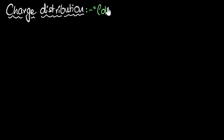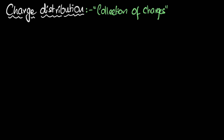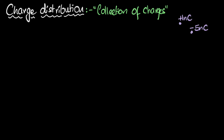Let's talk about charge distributions. Charge distribution basically means a collection of charges. You've actually dealt with them — for example, situations where you have a plus one nanocoulomb charge somewhere and a minus five nanocoulomb charge somewhere, and you're asked to calculate the force between them or the electric field somewhere. This is a collection of charges, and so this is a charge distribution.